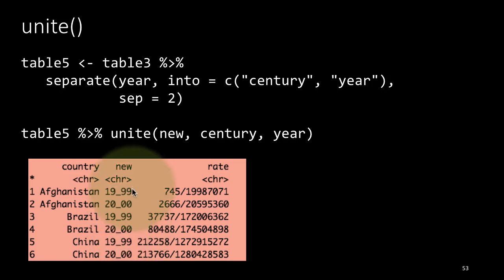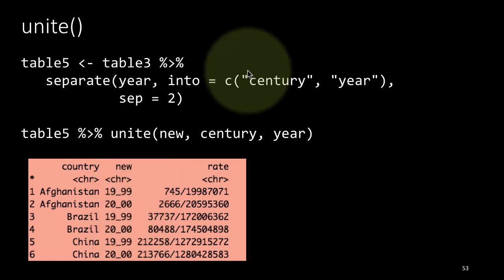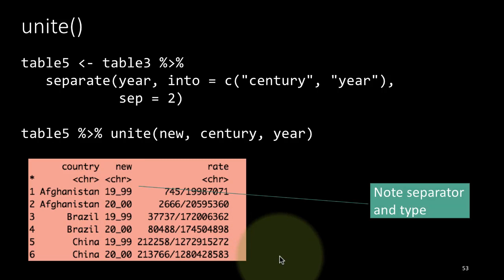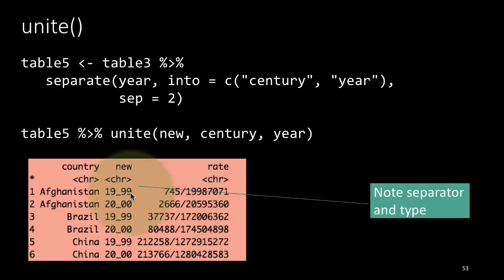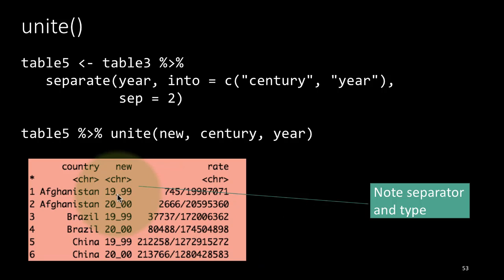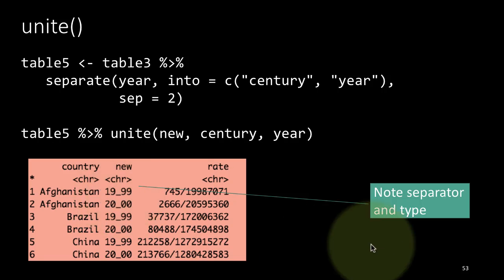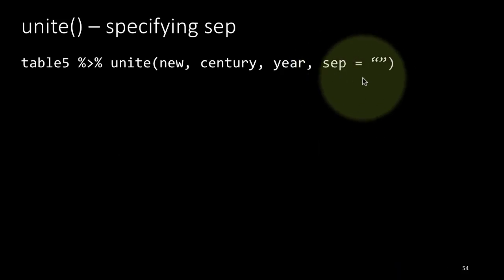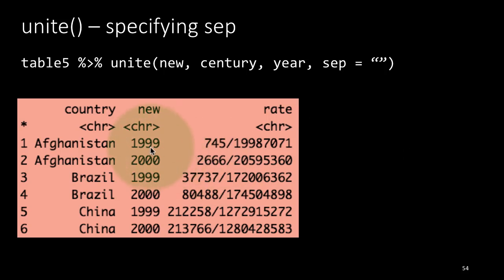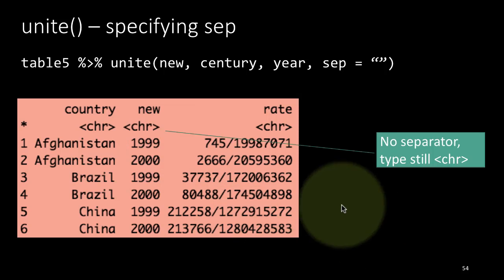The result may not be exactly what we wanted. It's a character column because we're combining two character columns, and there is an underscore character used as the default separator. So unite leaves some trace of what kind of union occurred. To get rid of that, we use the sep argument — say sep = '' (empty string) — and then there's no separator, and the columns are joined naturally, though the character type issue remains.